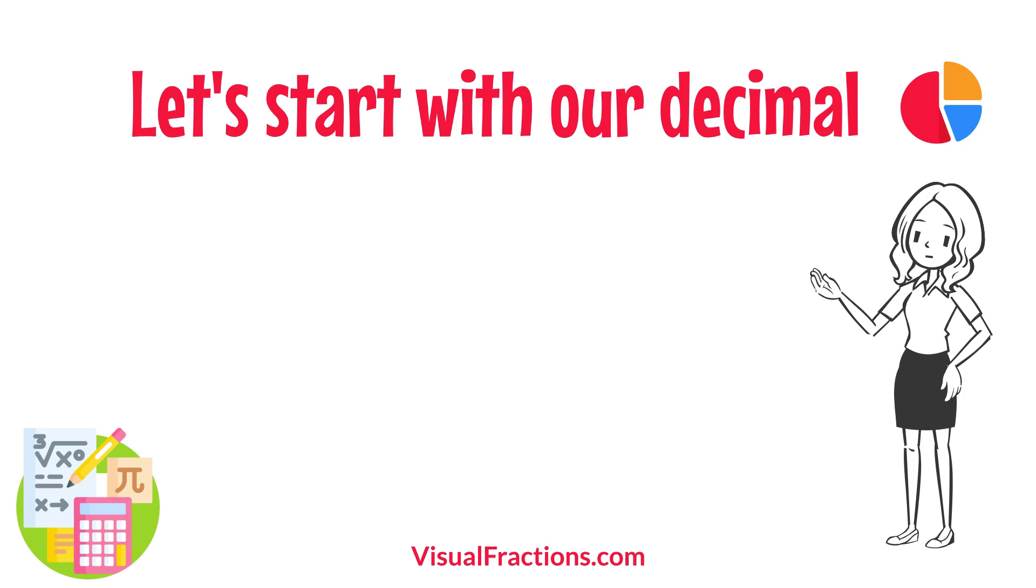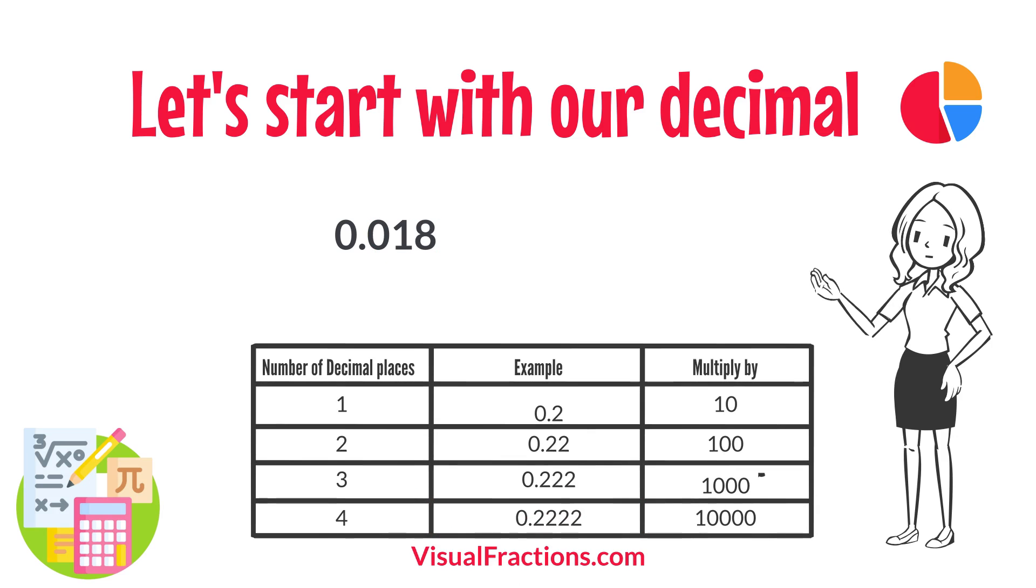Let's start with our decimal, 0.018. Notice there are three digits to the right of the decimal. This places it in the thousandths position.